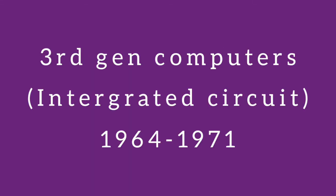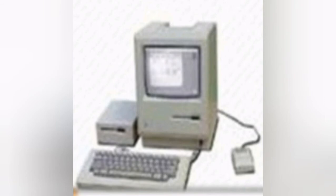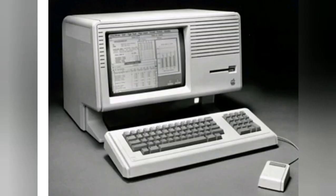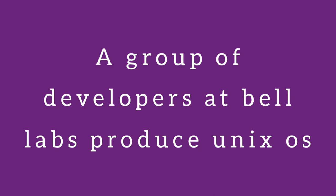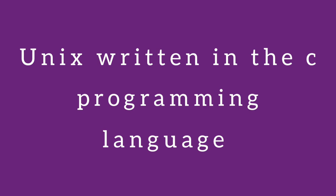The third generation spans from 1964 to 1971. Changes in the third generation include the introduction of the mouse, keyboards, and modern computers. Unix was created by a group of developers at Bell Labs, along with the C programming language and a new operating system.